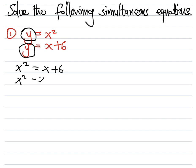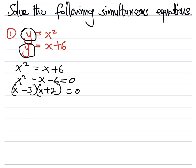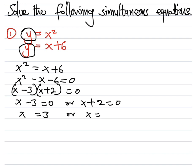We can move everything to one side and then factorize easily. We put x here and x there. The two factors of negative 6 that add to give negative 1 are negative 3 and 2. So we have (x − 3)(x + 2) = 0, meaning x − 3 = 0 or x + 2 = 0, giving x = 3 or x = −2.